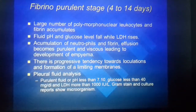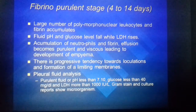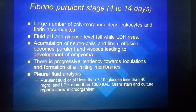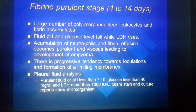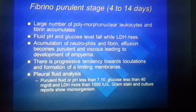In the fibrinopurulent stage, large numbers of polymorphs, leukocytes, and fibrin accumulate. Fluid pH and glucose levels fall while LDH rises. Accumulation of neutrophils and fibrin causes the effusion to become purulent and viscous, leading to development of empyema. There is a progressive tendency towards loculation formation and limiting membranes.